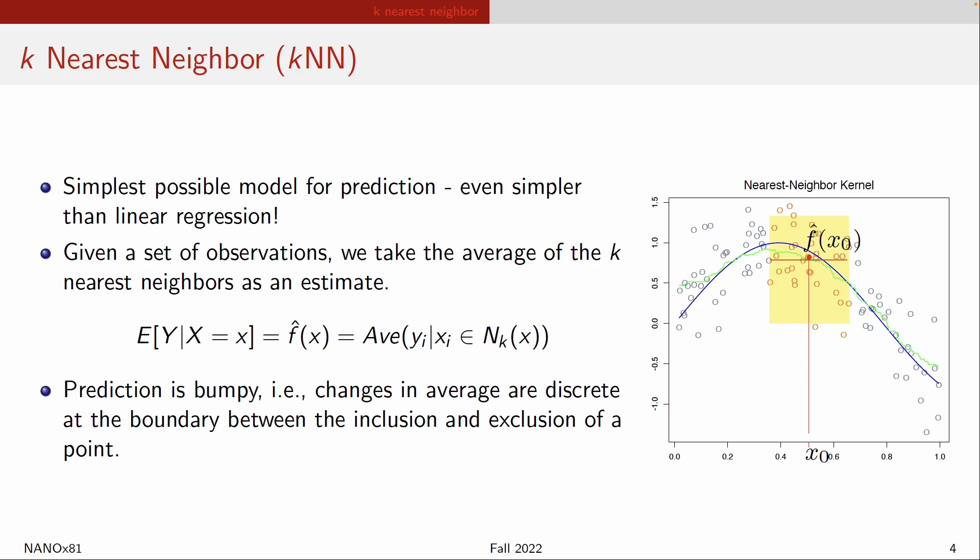The problem with k-nearest neighbor is that if you shift the data slightly to the left or right by a little bit, you lose one data point or gain another, and that introduces a discontinuous change in your prediction. So the prediction is bumpy.